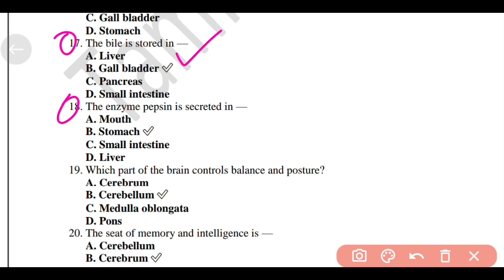The enzyme Pepsin is secreted in Option B, Stomach. Which part of the brain controls balance and posture? Option B, Cerebellum.